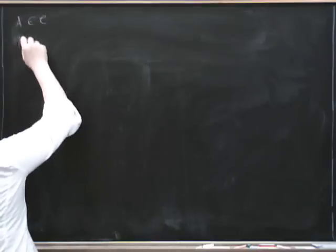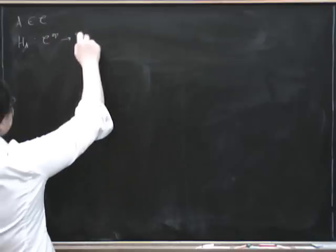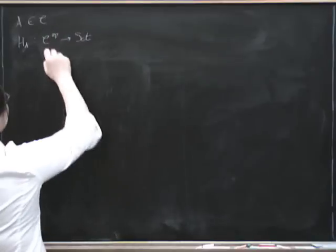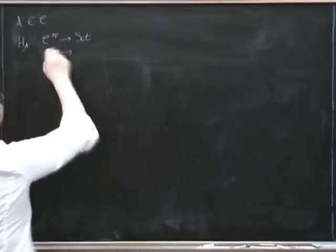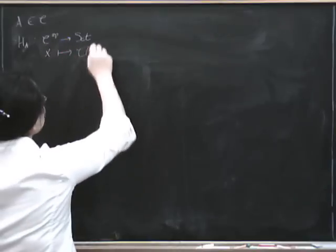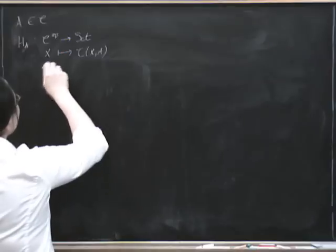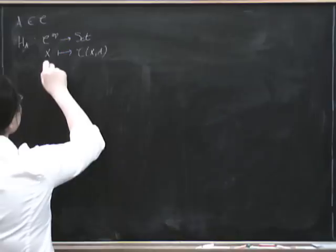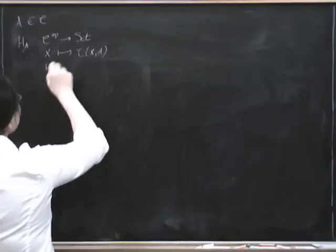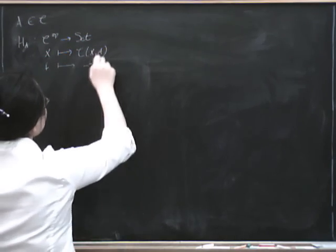there's a representable functor H sub A that goes from C op to set, which sends any object X to the set of morphisms from X to A, and then given any morphism F from X to Y, what we get is pre-composition by F.